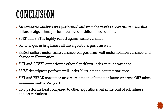In conclusion, we performed an extensive analysis and found that different algorithms perform best under different conditions. SURF and SIFT are highly robust against scale variance, and for changes in brightness almost all algorithms perform pretty well. The FREAK algorithm suffers under scale variance but performs well under rotation variance and changes in illumination. ORB outperforms other algorithms under rotation variance. Binary descriptors such as BRISK perform well under blurring and contrast variance. SIFT and FREAK consume the maximum amount of time per frame, whereas ORB takes the minimum time to compute, performing best in speed compared to other algorithms at the cost of some robustness.